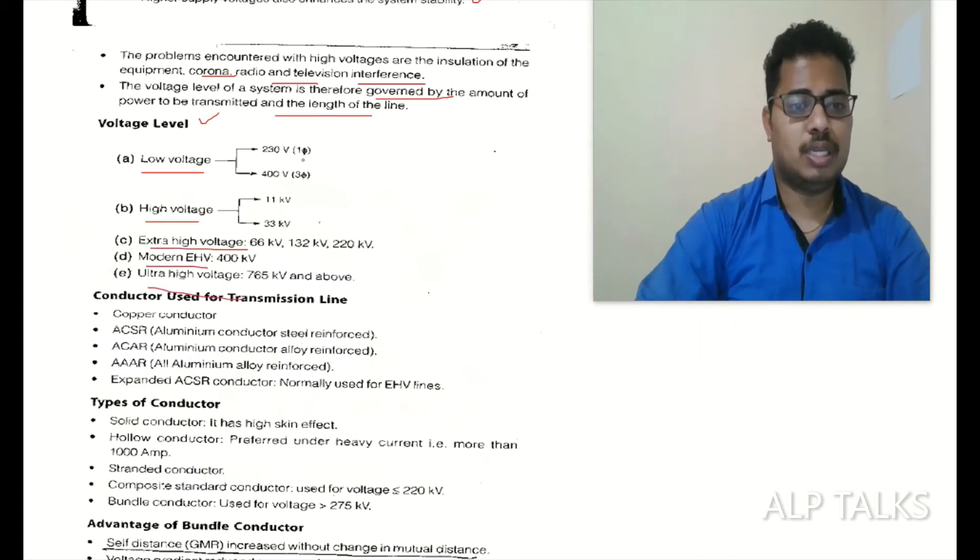Generally our household voltage 230 or 400 volts are low voltage. 11 or 33 kV in our local substations are high voltage. Extra high voltage, generally this will be at district level: 66 kV, 132 kV to 220 kV. Modern EHV also sometimes generally at district level. Ultra high voltage level, these are 765 kV and above. Around 1200 kV is the maximum voltage in India now.